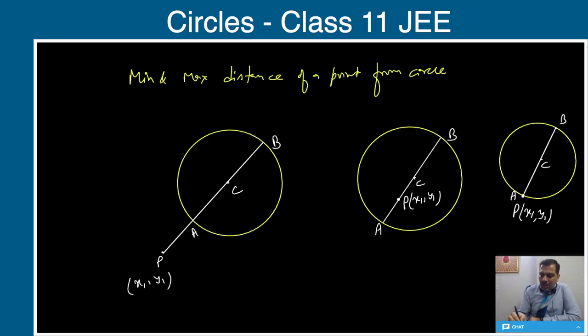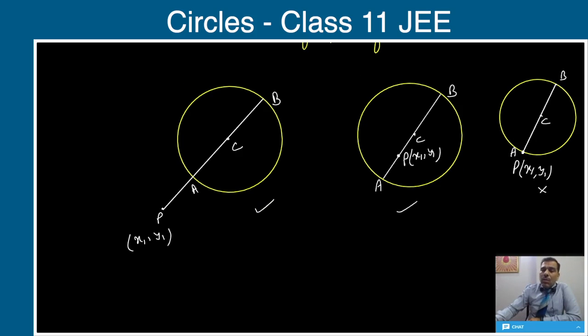In this case, you can see since P and A are coinciding - because if a point is lying on the circle, its distance from the circle will be zero, minimum will be zero. But AB is the diameter, so you can see there is no need to change the position. Minimum is zero, maximum is AB again.